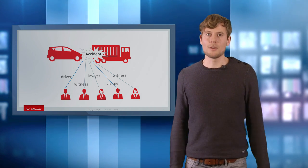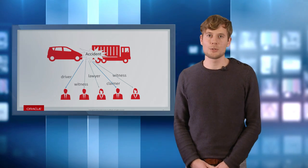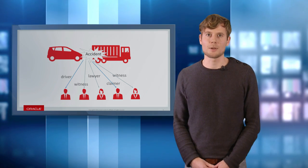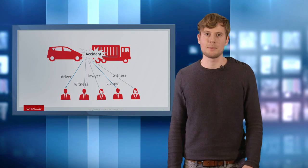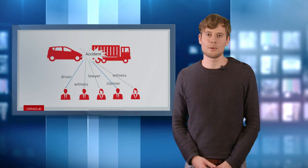Once you have your graph, the same sort of algorithms that you can use to detect influencers in a social network can now be used to show you the people that are connected to multiple insurance claims.